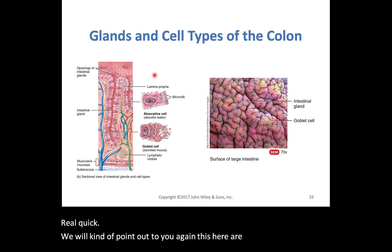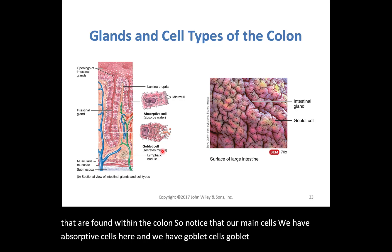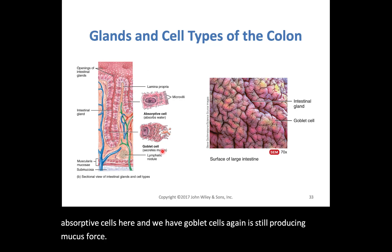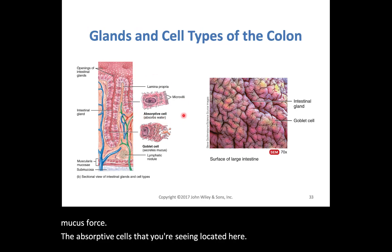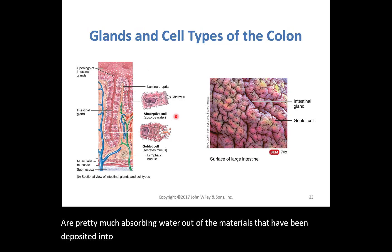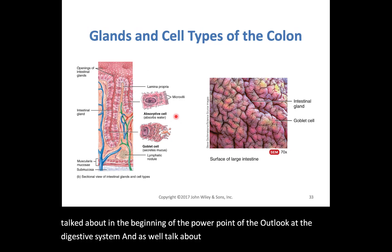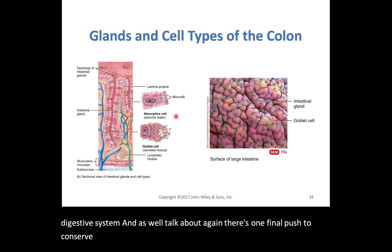The main cells found within the colon are absorptive cells and goblet cells. Goblet cells are still producing mucus. The absorptive cells are pretty much absorbing water out of the materials that have been deposited into the colon. As we talked about at the beginning of our look at the digestive system, there is one final push to conserve as much water as we can out of what we have already excreted and released.